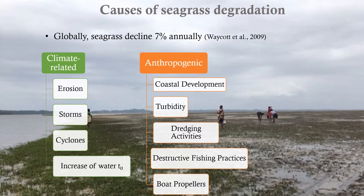Although they provide important ecosystem services, seagrasses are still overlooked, and globally, their cover declines 7% annually due to climate-related and anthropogenic pressures that include erosion, storms, cyclones, increase in water temperature, coastal development, turbidity, dredging activity, and destructive fisheries practices, among others. The result of this decline has been a change in coastal productivity, reduction in critical fisheries habitat, and increased erosion.